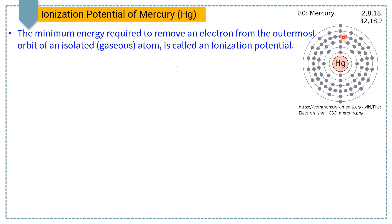The energy required to remove the first electron from the atom is called the first ionization energy, and the energy required to remove the second electron from the atom is called the second ionization energy.